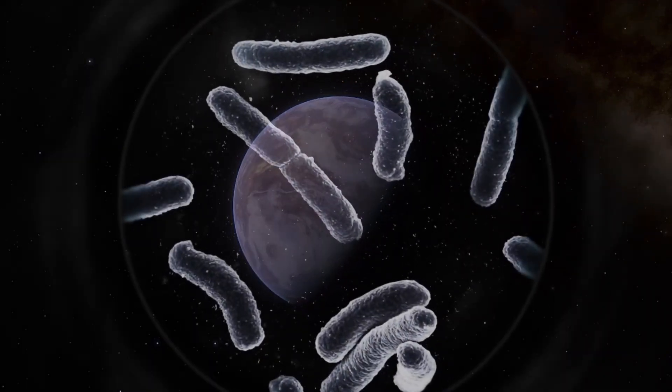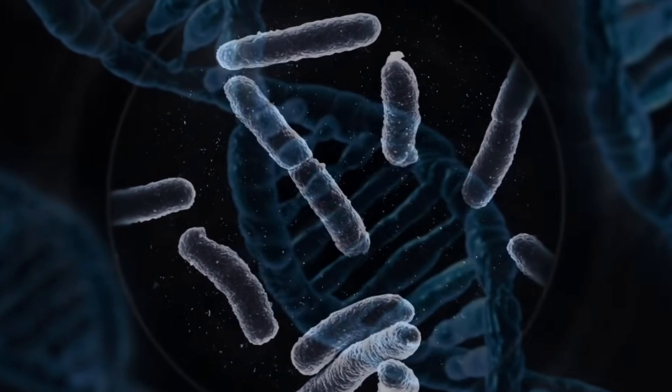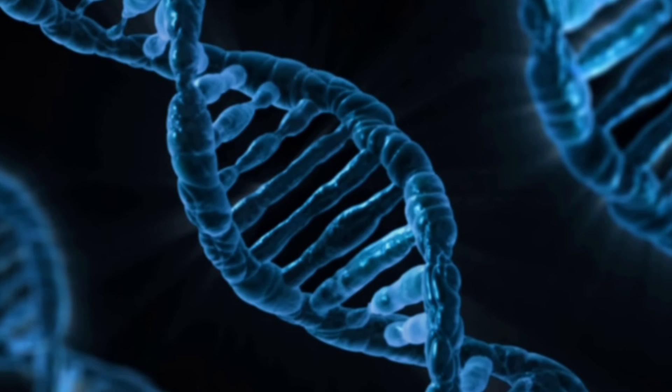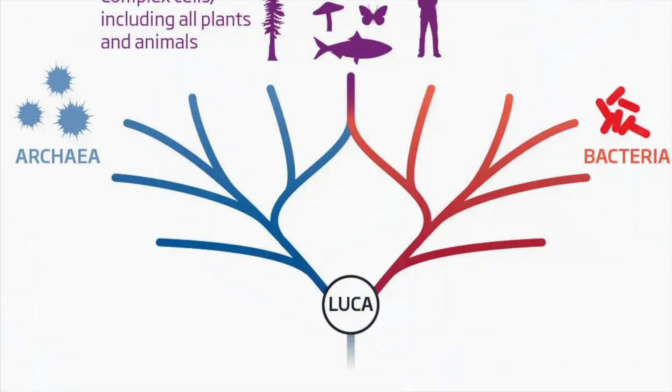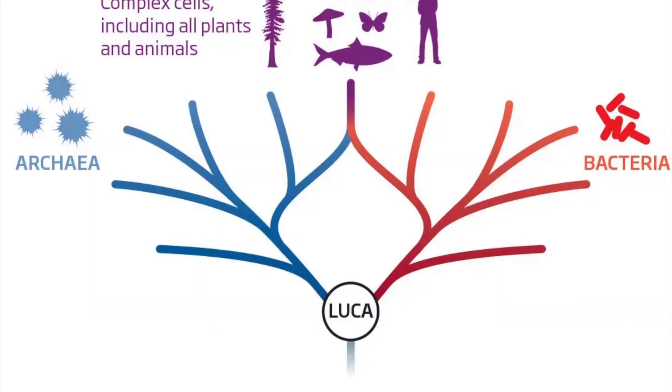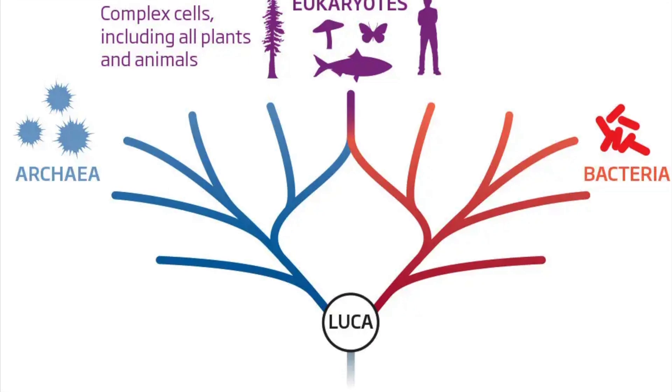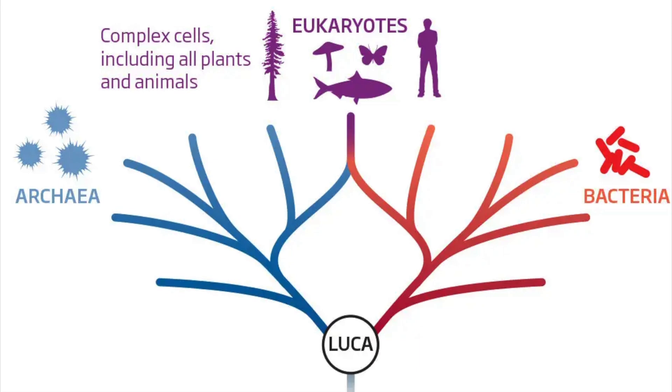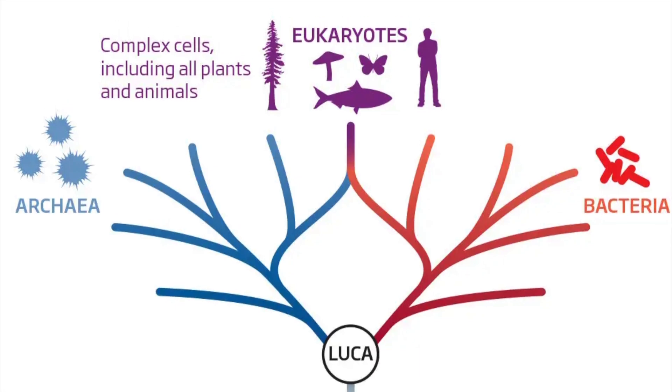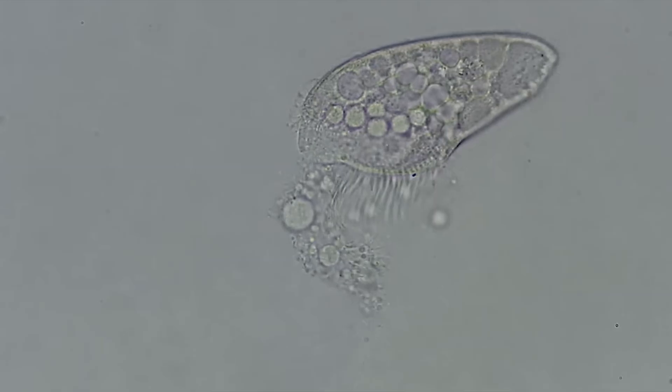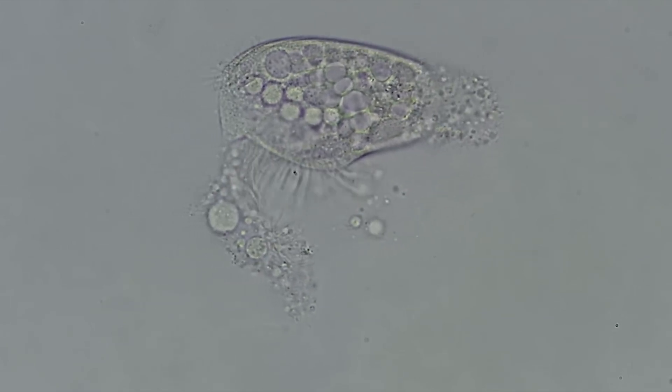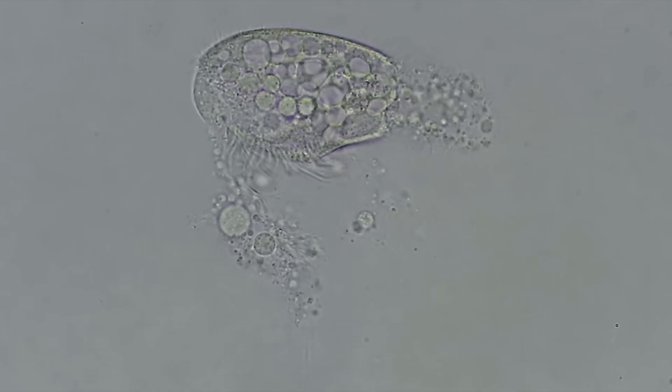This very well may be true, as while abiogenesis did occur relatively quickly, the current evidence we have suggests that it happened only once in our planet's history, as the prevailing scientific view is that all known life on earth shares a common ancestor, which suggests a single origin of life. However, we cannot definitively say that this rules out the possibility that abiogenesis occurred multiple times, as if other instances did occur, they either did not survive or were outcompeted by the life forms descending from the successful origin.